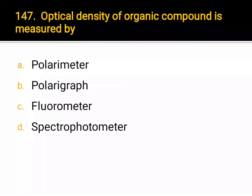Optical density of organic compound is measured by: A. polarimeter, B. polarograph, C. fluorometer, D. spectrophotometer. Correct answer: A. Polarimeter.